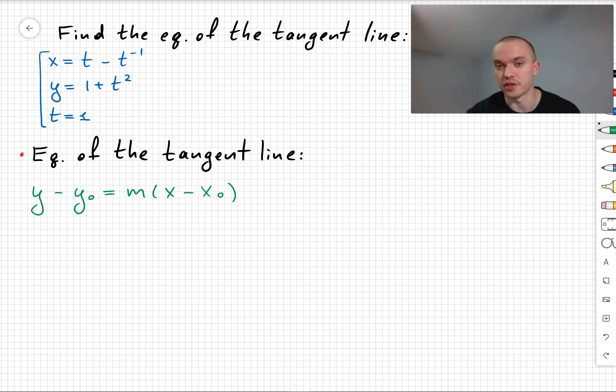Let's find the equation of the tangent line of this parametric equation. We know that the equation of the tangent line, from calculus or algebra, is y minus y0 equals m times x minus x0.